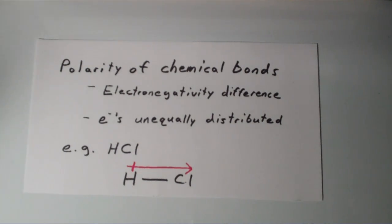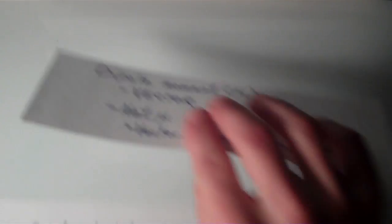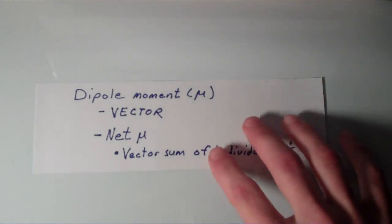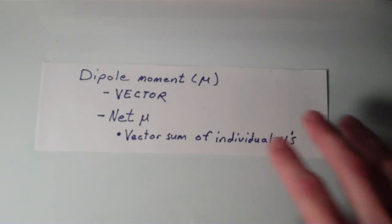So the way that polarity of chemical bonds is usually quantified is with the dipole moment. And the dipole moment is actually a vector quantity. And the interesting thing about vectors is that they have both a magnitude and a direction. So things like velocity, force, acceleration, those are all vectors. So not only do they have a magnitude to them, but they also point in a certain direction.